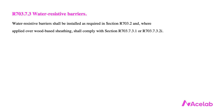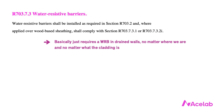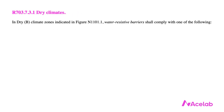Let's take a closer look at these code provisions. Rather than simply provide the code reference, I think it will be helpful to actually show you the code language to illustrate the needless complexity of the provisions related to stucco. The section I'm about to show you is from the 2021 IRC, but the IBC has nearly identical language. The first relevant section relates to water resistive barriers more generally — that's Section R703.7.3 — and it basically just requires that we include a WRB in drained walls no matter where we are and no matter what the cladding is.